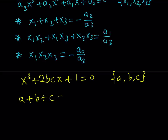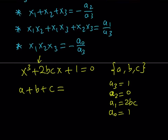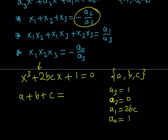Let's write down the coefficients. a3 equals 1, a2 equals 0 (there's no x squared term), a1 equals 2bc (the coefficient of x), and a0 equals 1 (the constant term). So the sum of the roots a plus b plus c equals negative a2 over a3, and since a2 is 0, this equals 0.